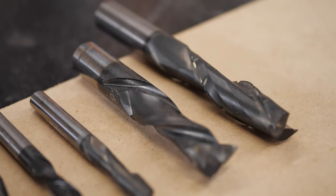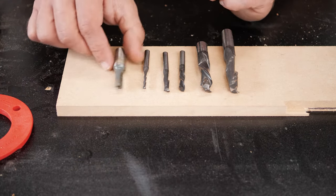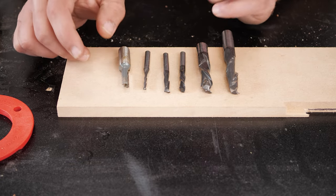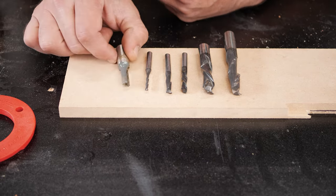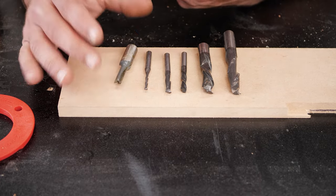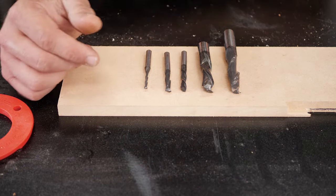There's spiral bits like this one here, compression bits that cut up and down, and straight bits. Now this is from a garbage Chinese set I got, and these dull and break really fast. I hate the straight cutters because you get tons of tear out and everything like that. They are a lot cheaper, but I much prefer spiral bits.